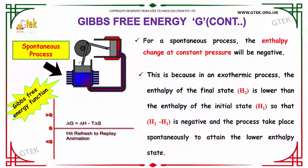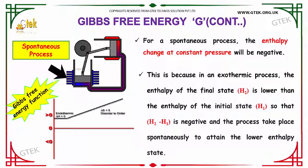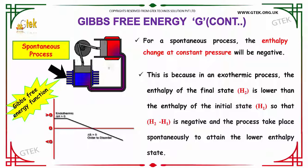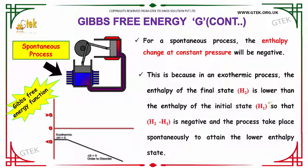For a spontaneous process, the enthalpy change at constant temperature will be negative. This is because in an exothermic reaction or process, the enthalpy of the final state H2 is lower than enthalpy of the initial state H1, so that H2 minus H1 is negative and the process takes place spontaneously to attain the lower enthalpy state.